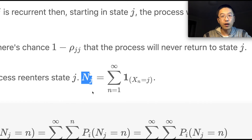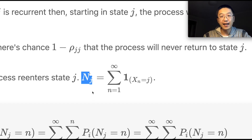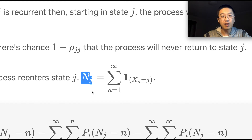Let's define a random variable N_j that counts the total number of times the process revisits state j. N_j is the sum of the indicator variables of each transition step X_n when X_n equals j.